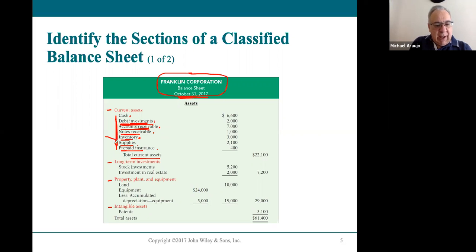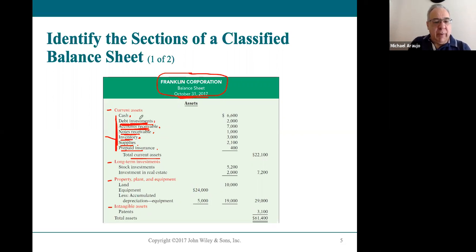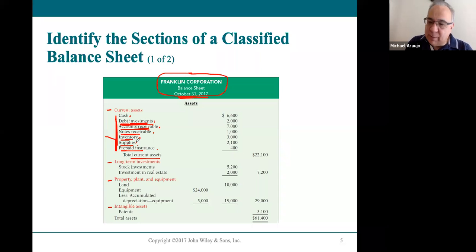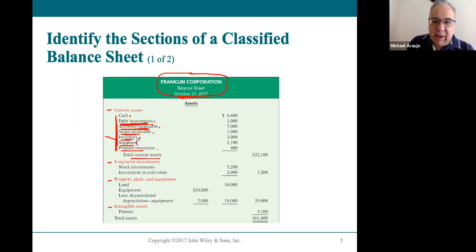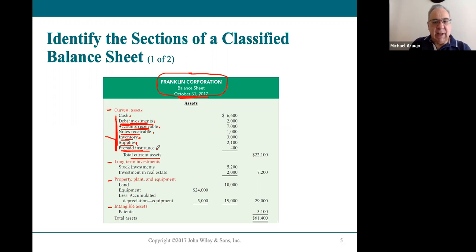Starting with inventory and below, we can also start expensing things — we'll use these up. Inventory will be turned into cash, yet we expense what we paid for it. Supplies do not turn into cash; they get used up. Think about all those coffee cups at Dunkin' Donuts or soda cups at McDonald's — those are supplies that get used up very quickly and then expensed. Prepaid insurance similarly gets used up month to month as we expense the portion of insurance we've paid.